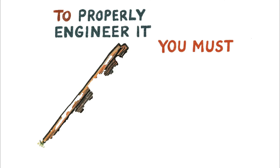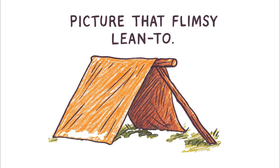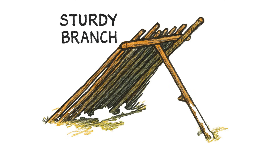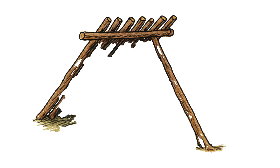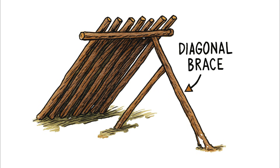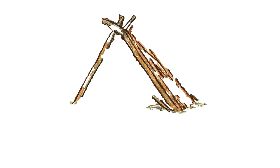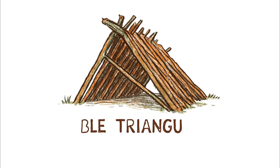To properly engineer it, you must introduce a triangle. Picture that flimsy lean-to — now take a sturdy branch and brace it diagonally, running from the middle of the ridge pole down to a point on the ground away from the shelter's entrance. This single diagonal brace creates the necessary triangle, locking the structure in place and giving it the rigidity it needs to resist the wind. You have transformed a simple lean-to into a stable, triangulated structure.